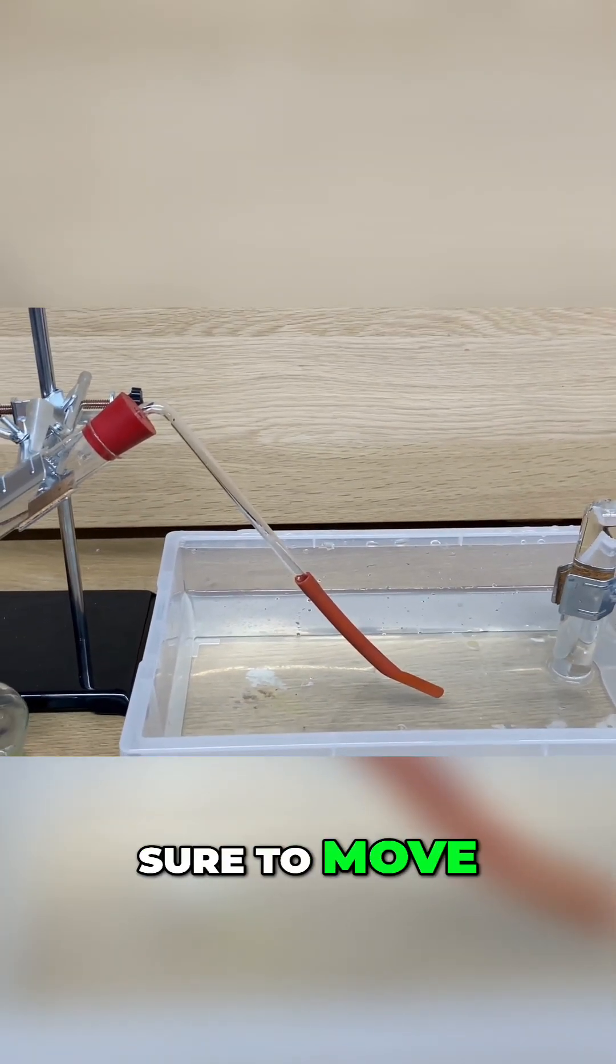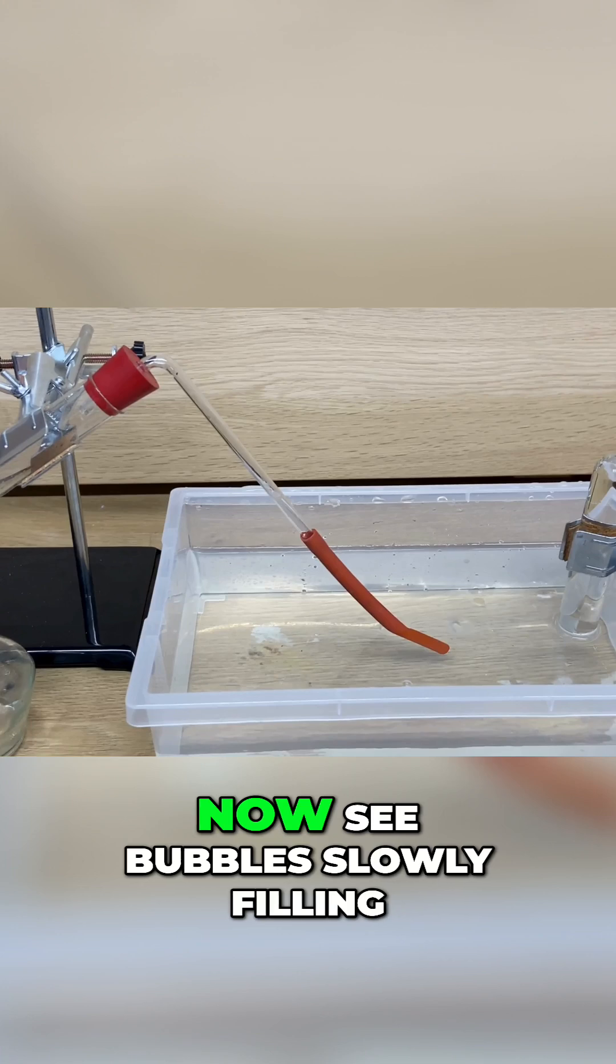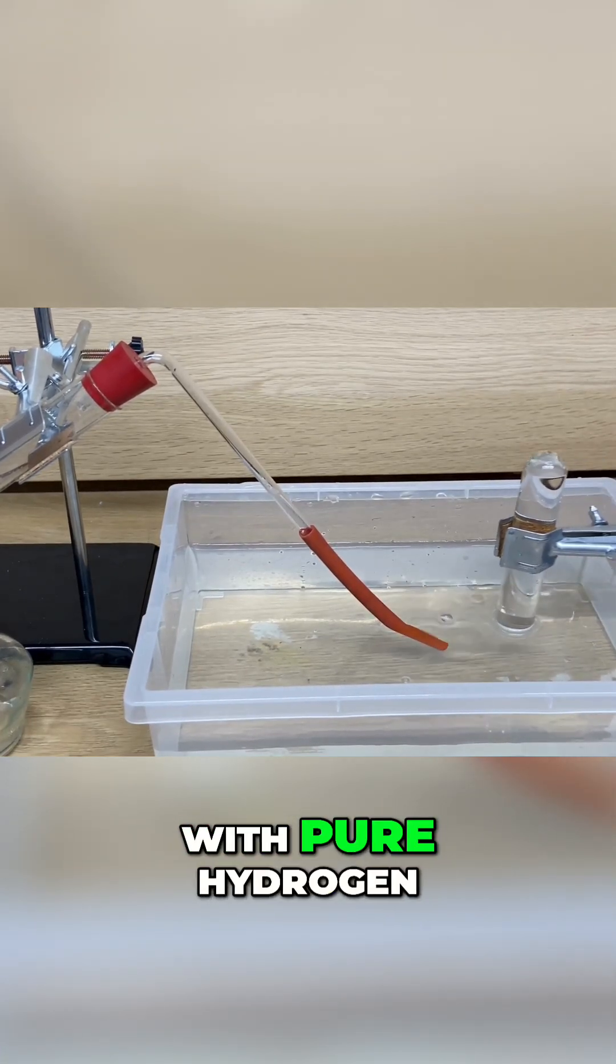After the 15 bubbles, make sure to move the rubber tubing exactly under the test tube. You can now see bubbles slowly filling up the test tube with pure hydrogen.